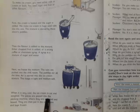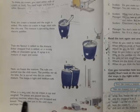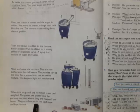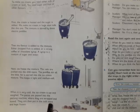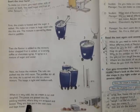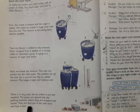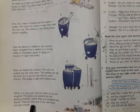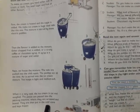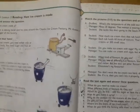When it is very cold, ice cream is cut and weighed. The pieces are passed into the packing machine where they are wrapped and boxed. They are then put in the cold store and kept frozen. When the ice cream is very cold it is cut into pieces, they are wrapped and then again they are put into the cold store.